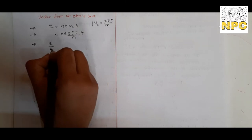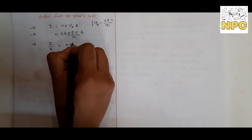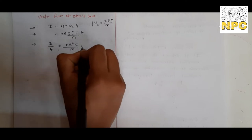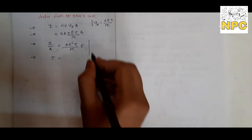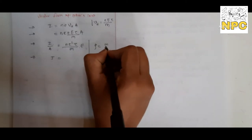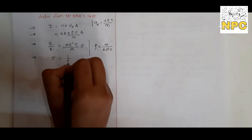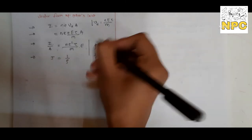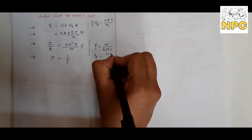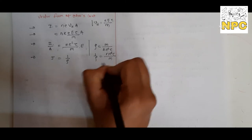Rearranging, i by A equals ne²τ by m times E. Here, i by A — current per unit area — is the current density J. We also derived that rho equals m by ne²τ, so the term ne²τ by m equals 1 by rho. Therefore J equals (1 by rho) times E.